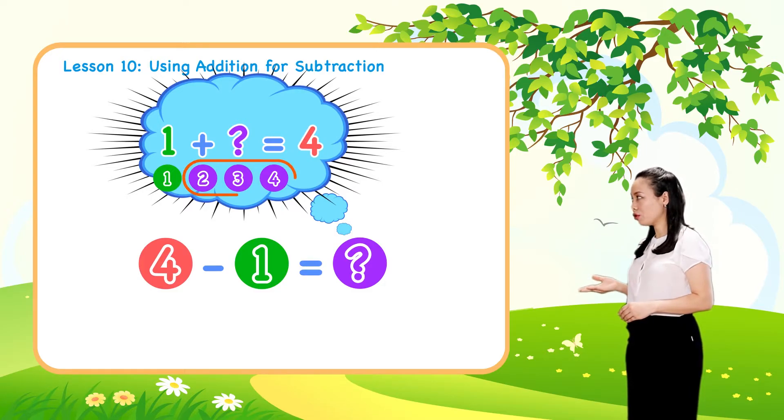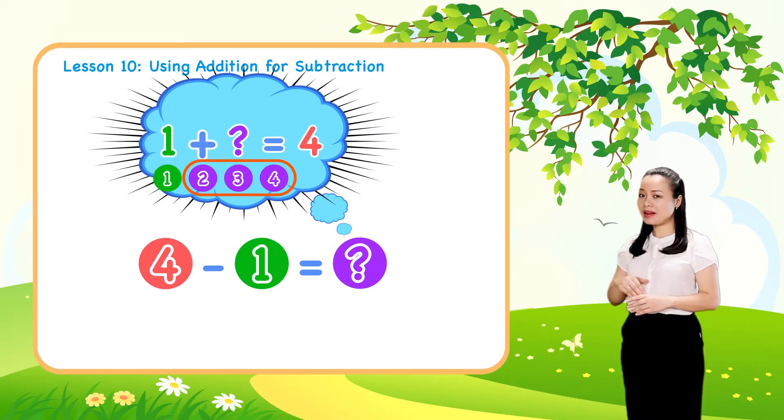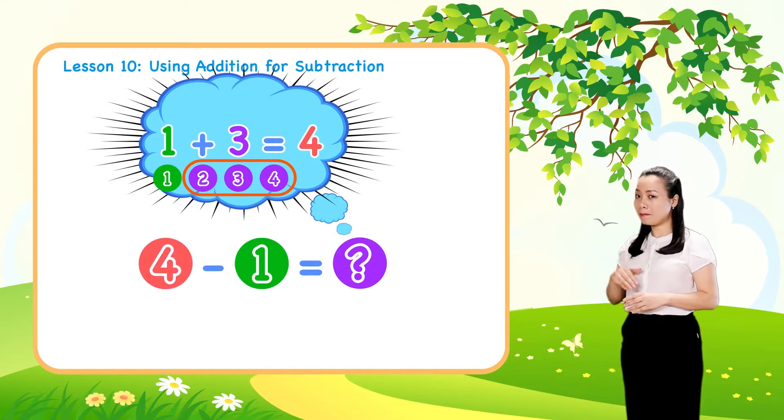Look! It needs 3 more dots to make 4. So 1 plus 3 equals 4. Therefore, 4 minus 1 equals 3.